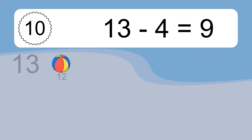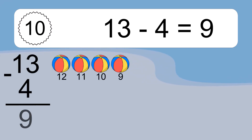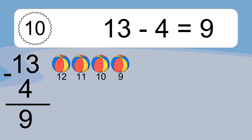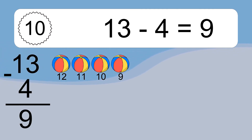13 minus 4 equals what? 13 minus 4 equals 9. Let's count it: 12, 11, 10, 9.